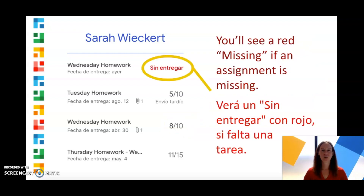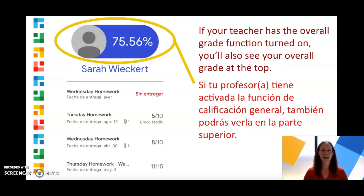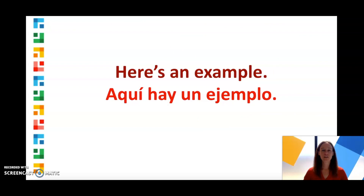And you'll see a red 'missing' if an assignment is missing. If your teacher has the overall grade function turned on, you'll also see your overall grade at the top. Here's an example of how to view your grades.